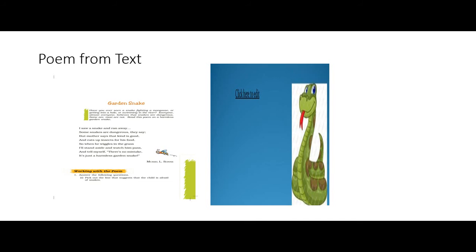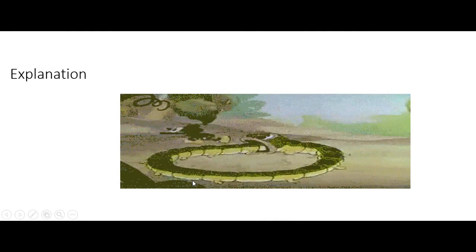It is a very short poem where the poet tells the reader what his mother explains about snakes. The poet observed the pattern of the snake's movement and wrote this short poem that shows his interest and observation of other living species. He shares his personal account of an encounter as a child. The poet talks about a snake and his mother, who shared information about the snake and reassured the child that this kind of snake is not at all poisonous.